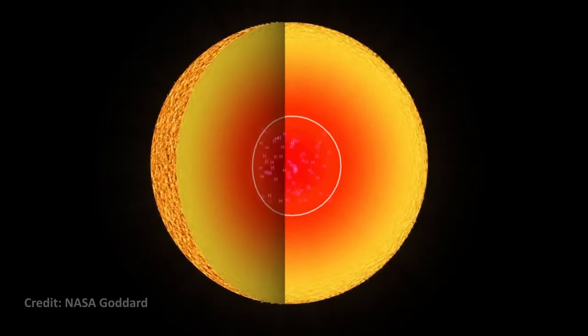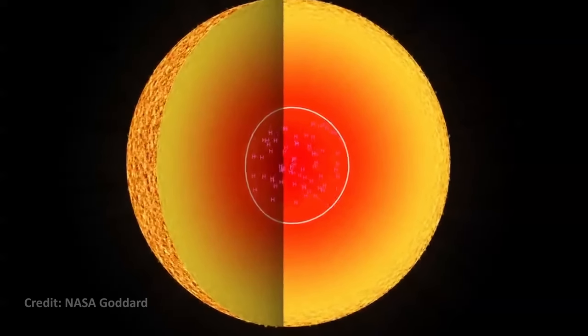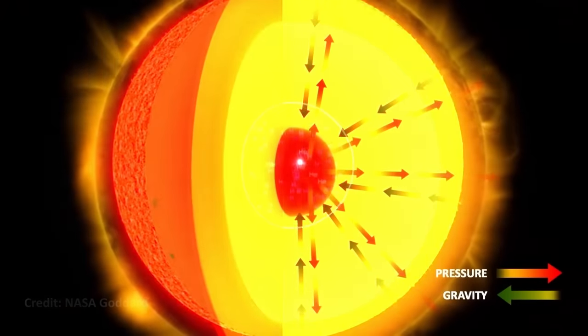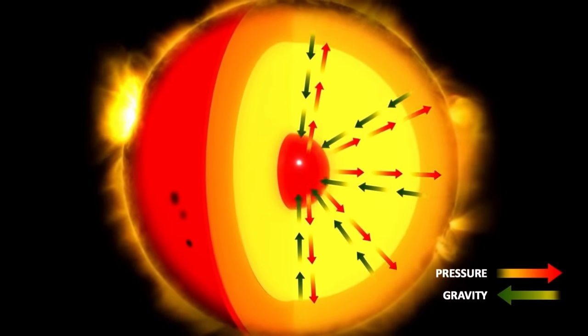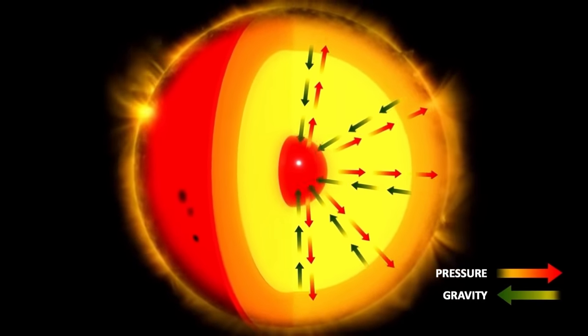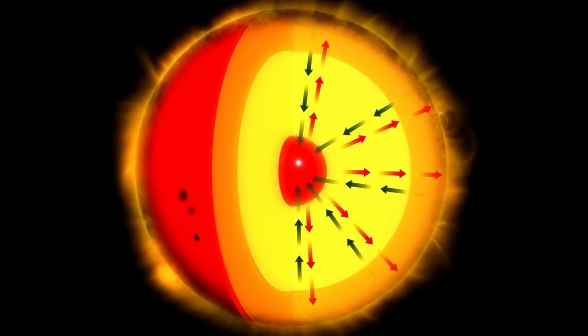The energy generated by these reactions provides the heat and light that make the stars shine, as well as the radiation pressure to hold off gravitational collapse. The balance between the inward force of gravity and the outward pressure generated by the fusion reactions keeps the stars stable and in a state of equilibrium.